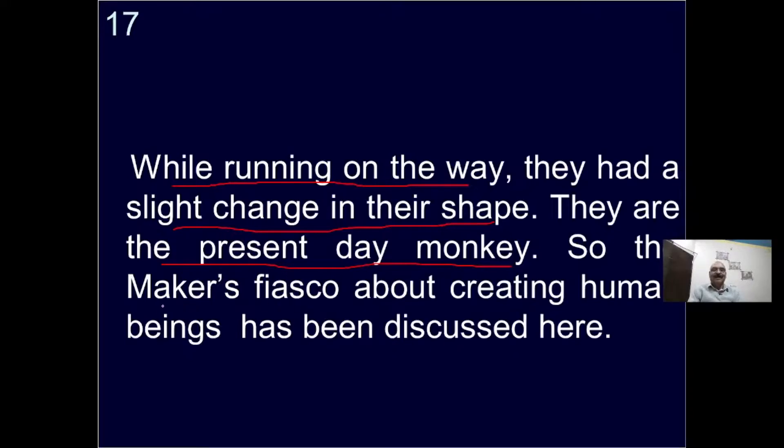Here the Maker's fiasco is discussed. God also failed in creating humans. First he took mud, made humans from mud, and wasn't satisfied with them, so he made them mud again. Then he made wooden humans. The wooden humans ran away to the jungle, and while running their shape changed and they became monkeys.